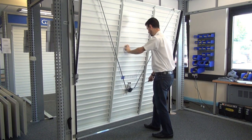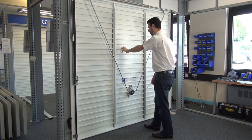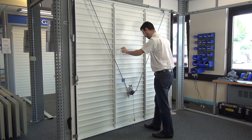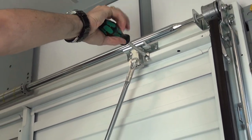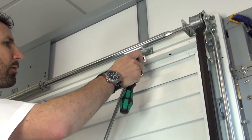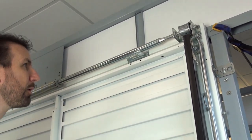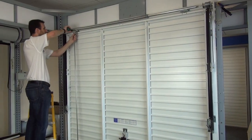Before you begin, please make sure your canopy garage door is in the closed position. First, remove the latches from the top of the door by unscrewing the 10mm hex head screws. Then remove the two locking rods.